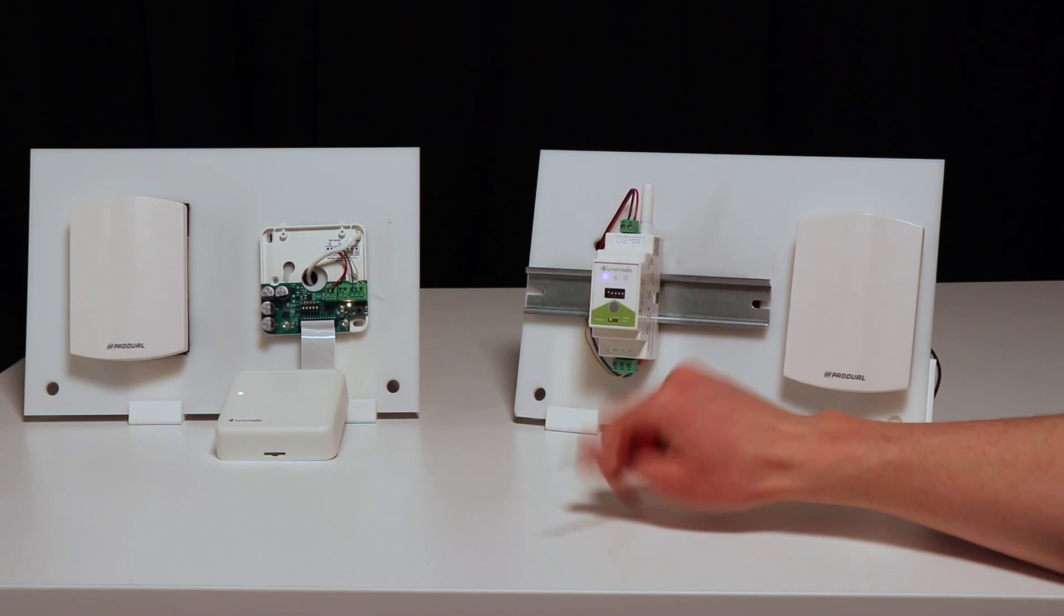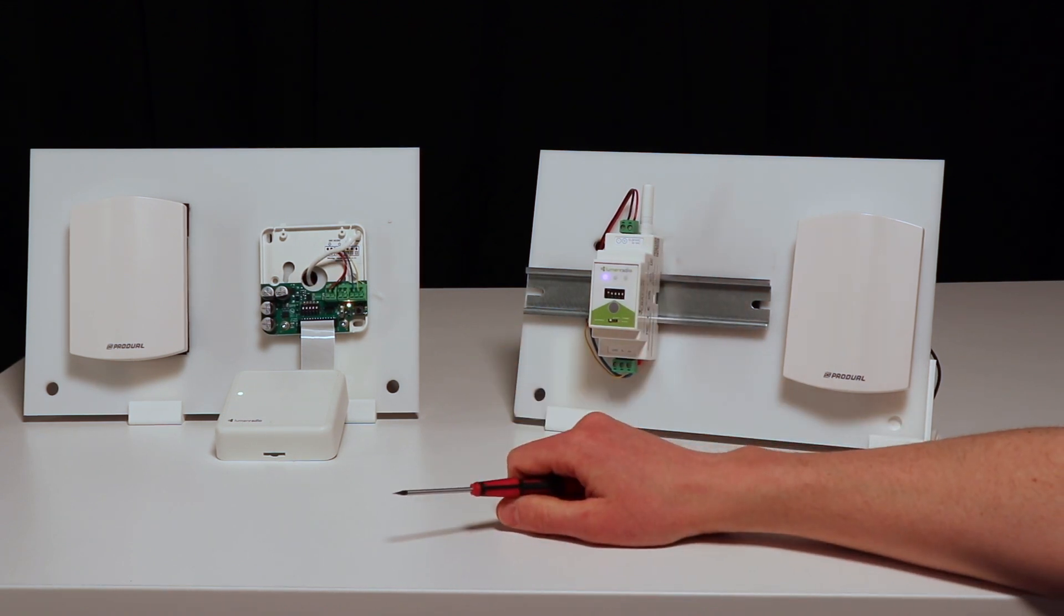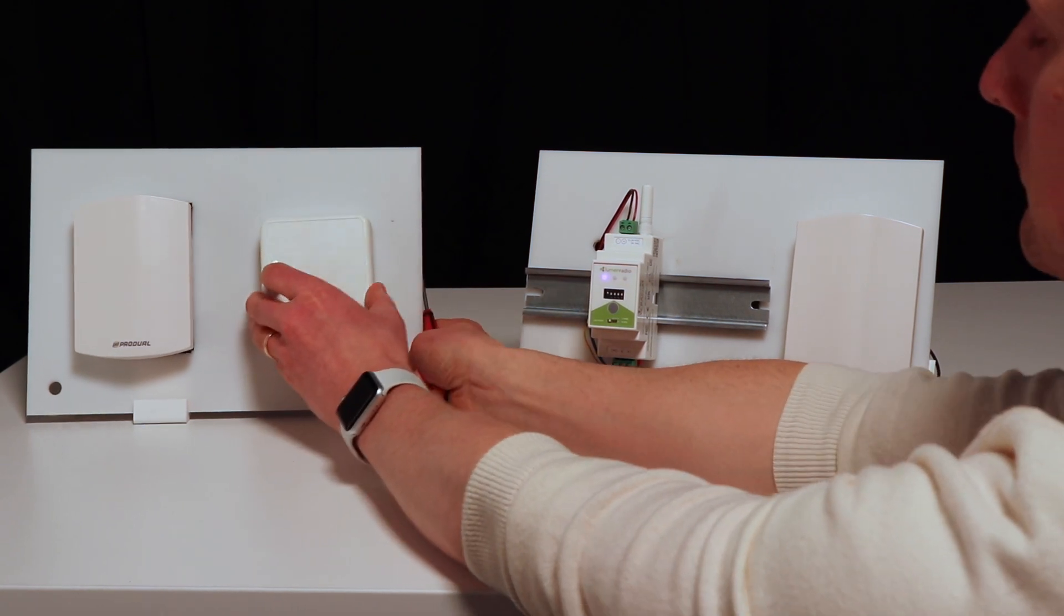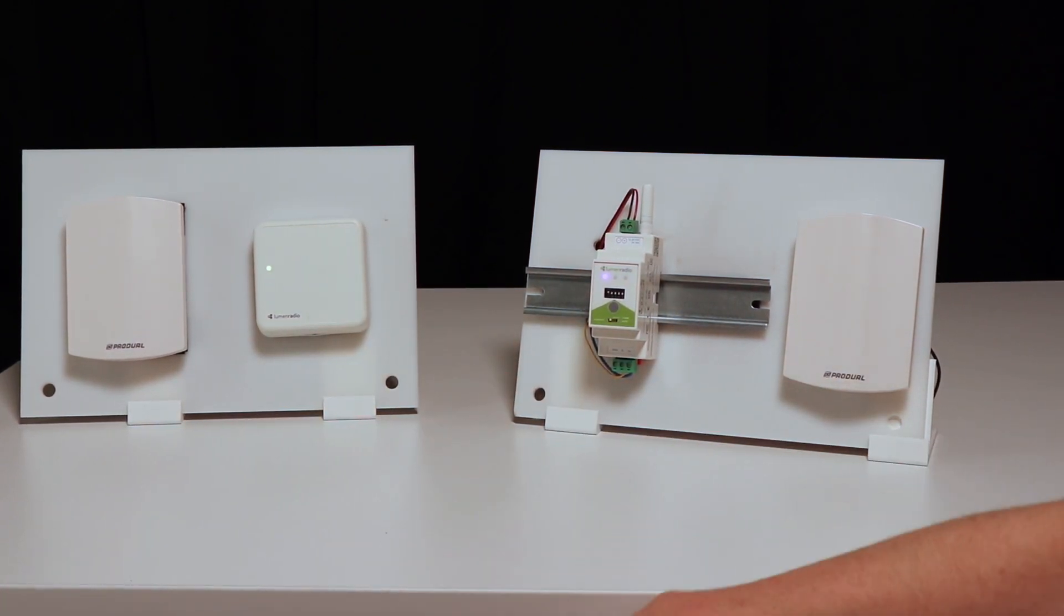Once everything is configured and you see signal strength is good where you want it, you close the wall mount. The network is now installed.